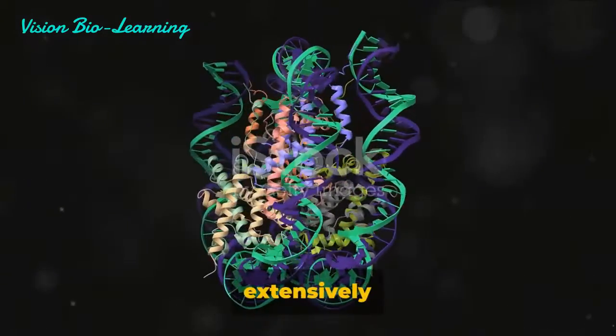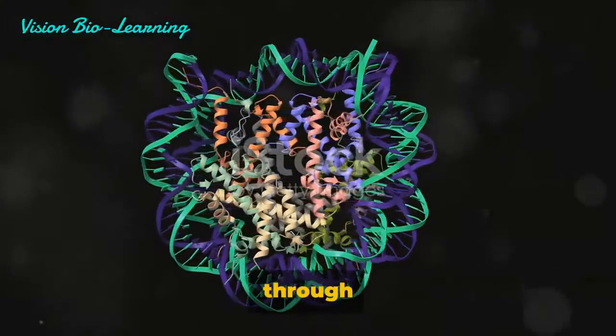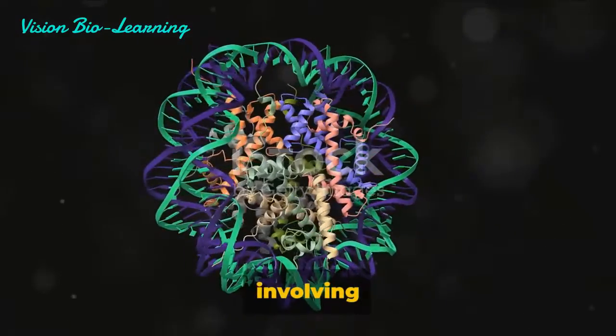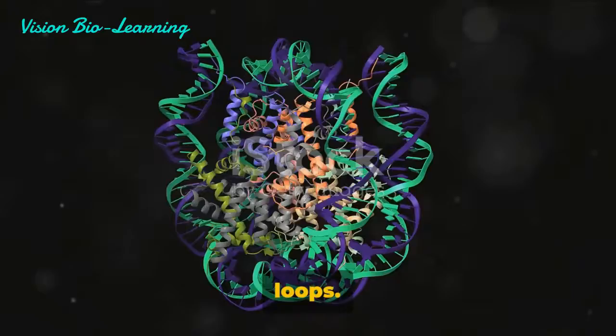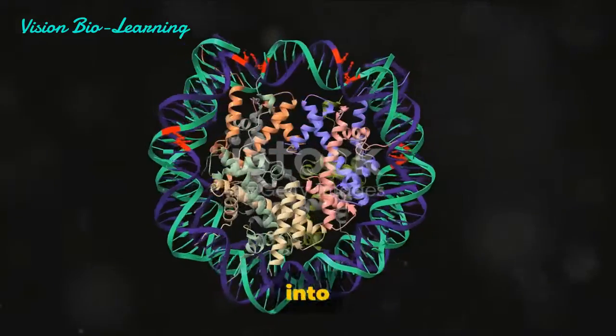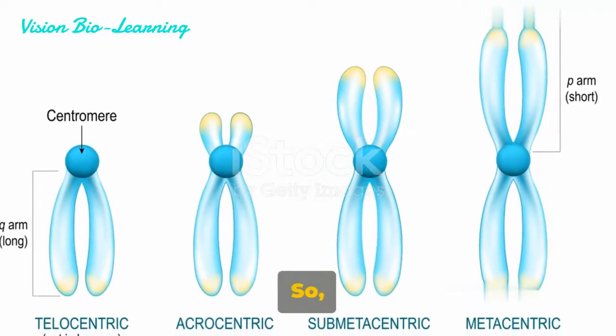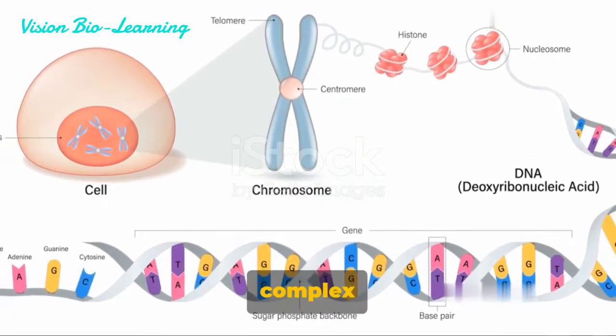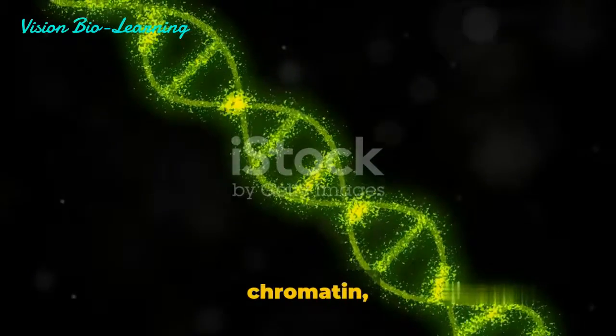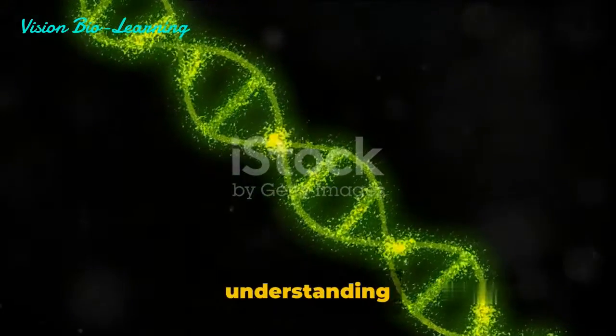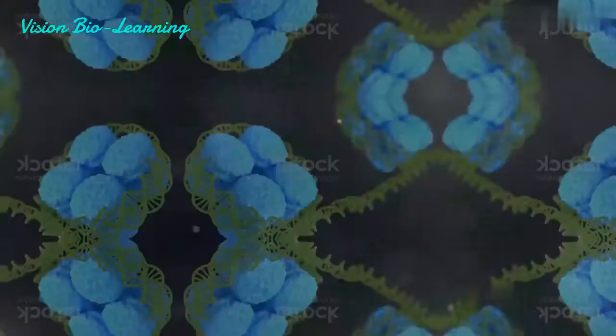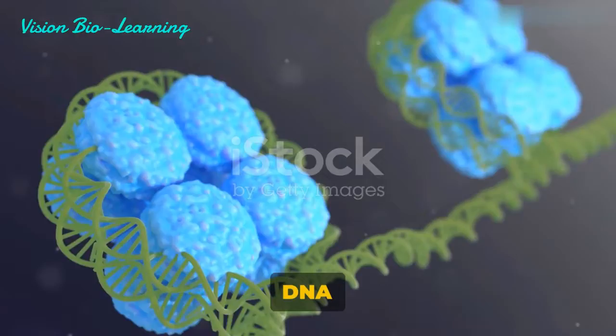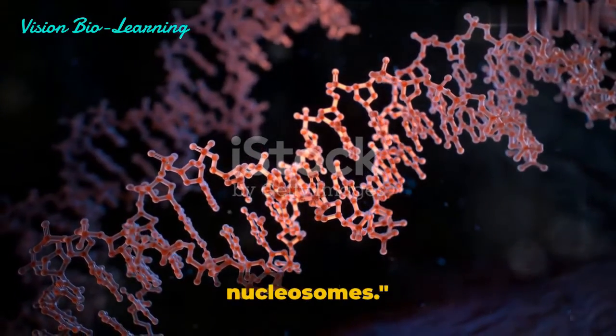The answer lies in the packaging. The DNA is extensively packaged in the chromosome through three levels of folding involving nucleosomes, 30 nm filaments, and radial loops. But we'll delve deeper into that in the next scenes. So, the DNA protein complex in the nucleus, known as chromatin, is the first step in understanding how DNA is packaged in chromosomes.